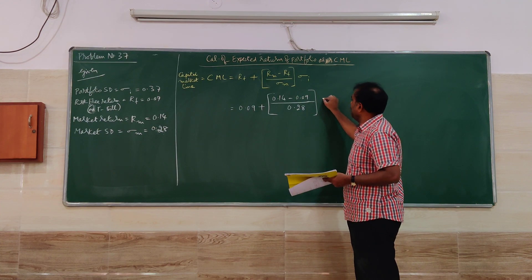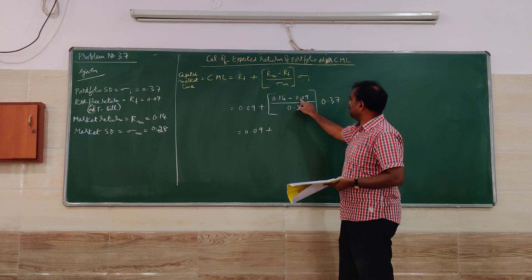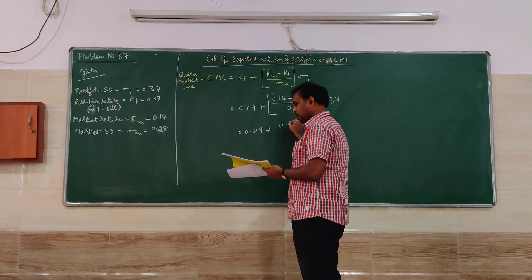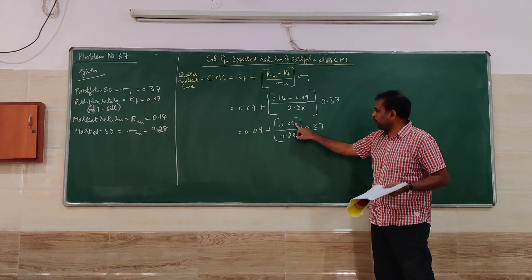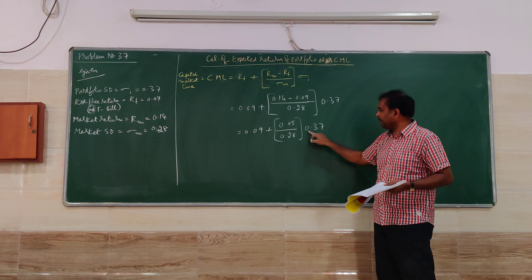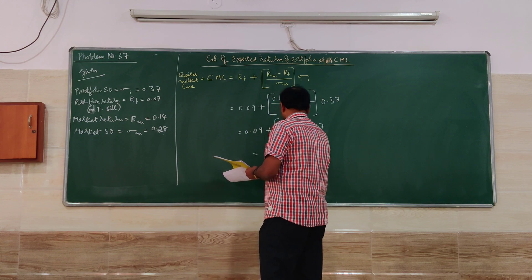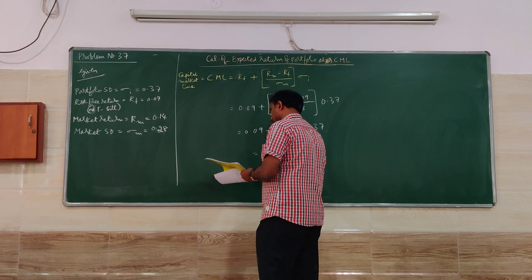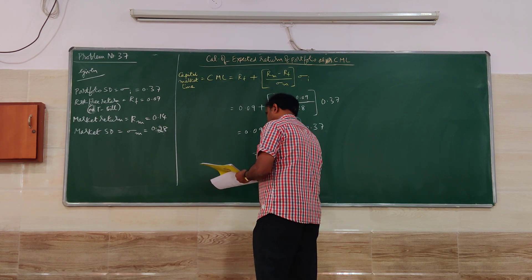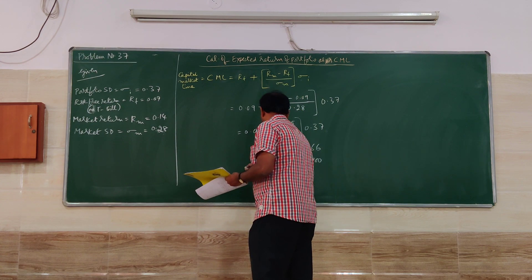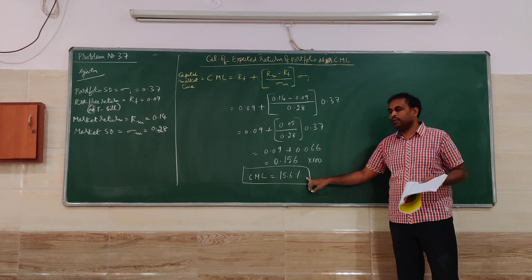So we have: 0.09 plus (0.14 minus 0.09) divided by 0.28, multiplied by 0.37. Simplifying: 0.14 minus 0.09 equals 0.05, divided by 0.28, multiplied by 0.37. This gives 0.09 plus 0.066, totaling approximately 0.156. Multiplying by 100, the expected return based on CML is 15.6 percent.